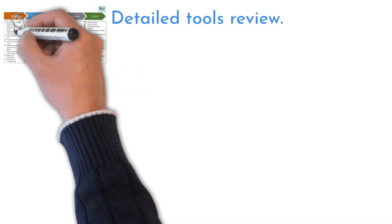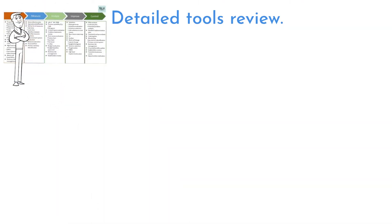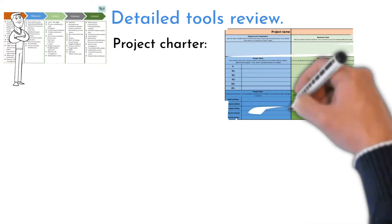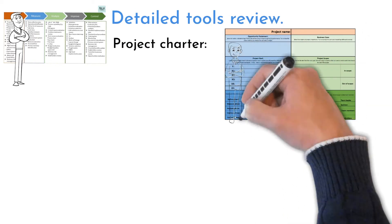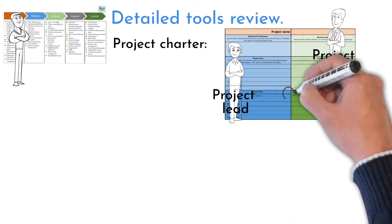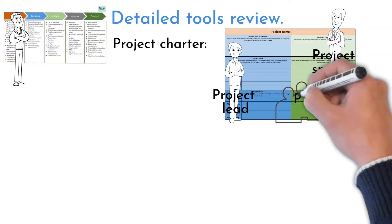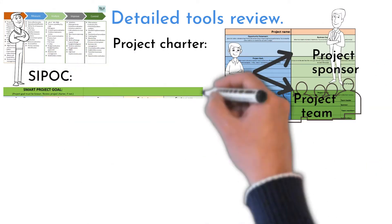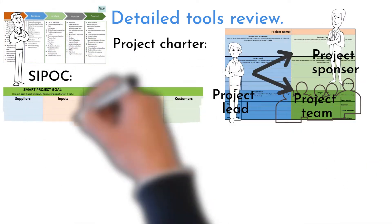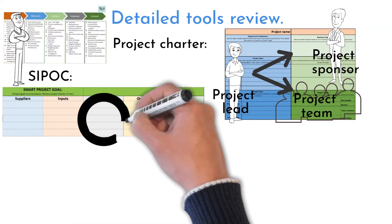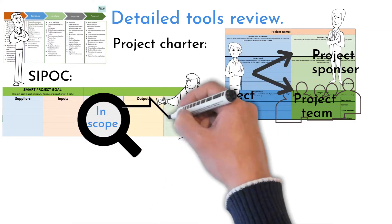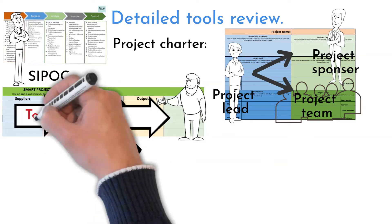Let's briefly review each tool one by one. Project Charter helps to unify the project goal and its deliverables between the team leader, sponsor, and the team. Always start your project by using this tool. SIPOC helps the team with identifying and scoping the process and its boundaries, and identifies deliverables to final customers and what the process needs to satisfy customers.